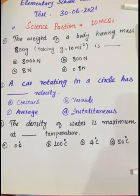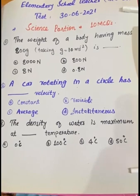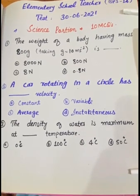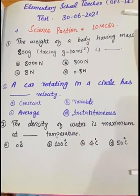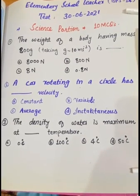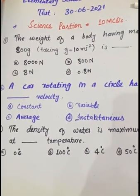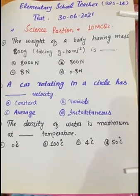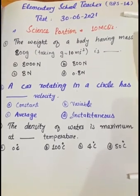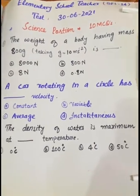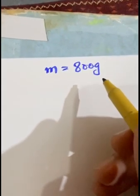The first MCQ is about weight and mass. It states: the weight of a body having mass 800 grams, taking g (gravitational acceleration) equal to 10 m/s², is: option A 8000 Newton, option B 800 Newton, option C 8 Newton, option D 0.8 Newton. To solve this, from the given data, mass is 800 grams, which we must convert into kilograms.